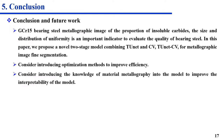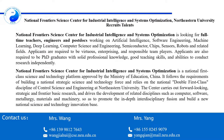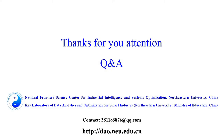Finally, let me summarize the model presented and the future work. GCR-15 bearing steel metallographic images show the proportion of insoluble carbides; the size and distribution uniformity is an important indicator to evaluate the quality of bearing steel. In this paper, we propose a novel two-stage model, TUNET-CV, for metallographic image fine segmentation. In the future work, I will consider introducing optimization methods to improve efficiency, and introducing knowledge of material metallography into the model to improve the interpretability of the model. Welcome to China and communicate with us. Thank you, that's all my presentation.